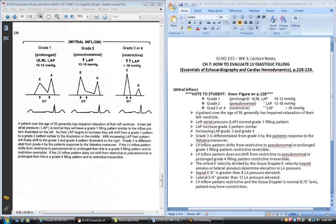Grade 2 is your pseudonormal, where your left atrial pressure is beginning to go up, and you have 13 to 18 millimeters of mercury in your left atrial pressure. And your E is now bigger than the A, and it gives the simulation that it's still a normal wave, the E is larger than the A.